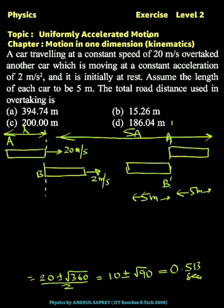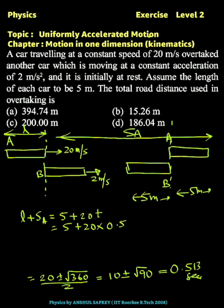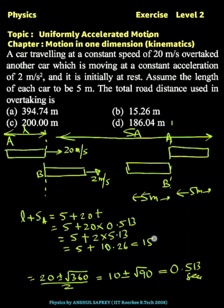The length of the road used equals L plus displacement by car A, which equals 5 plus 20t, equals 5 plus 20 times 0.513, equals 5 plus 10.26, which equals 15.26 meters. That is the final answer.